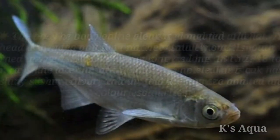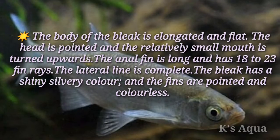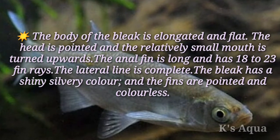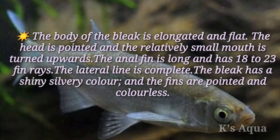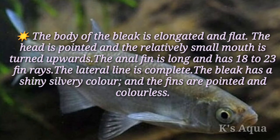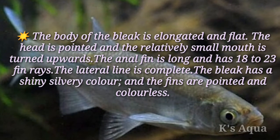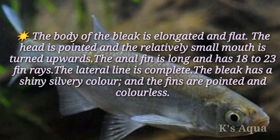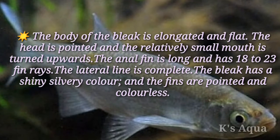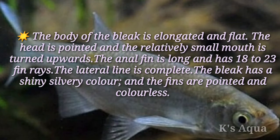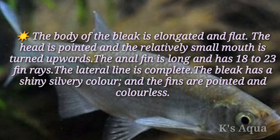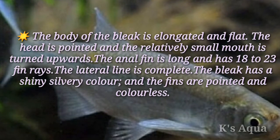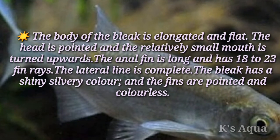The body of the bleak is elongated and flat. The head is pointed and the relatively small mouth is turned upwards. The anal fin is long and has 18 to 23 fin rays. The lateral line is complete. The bleak has a shiny silvery color and the fins are pointed and colorless.